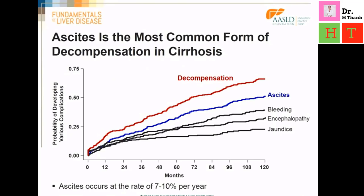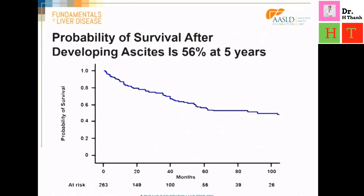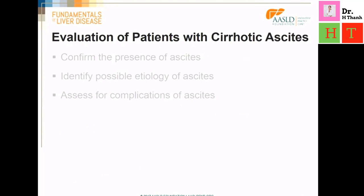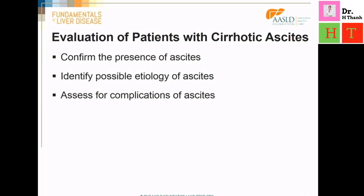Ascites is the most common complication of cirrhosis. It occurs at the rate of approximately 7 to 10 percent per annum, so after the diagnosis of cirrhosis, over the ensuing 10 years, approximately two-thirds of patients will develop ascites at some stage. Once ascites develops, there is a significant reduction in patient survival, so that a patient has only a 56 percent chance of being alive at five years. When a patient presents with cirrhosis and abdominal swelling, we need to confirm the presence of ascites, identify the possible etiology, and assess for complications of the ascites.